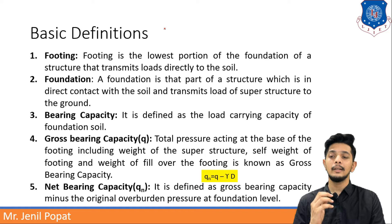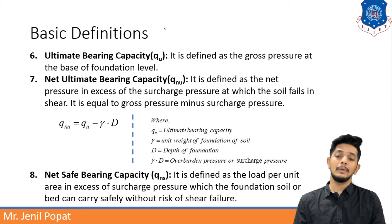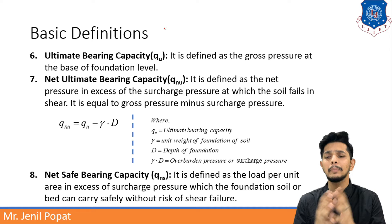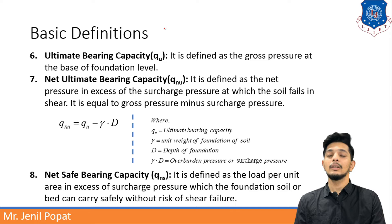Ultimate bearing capacity qu is defined as the gross pressure at the base of the foundation level. Net ultimate bearing capacity, qnu, is defined as the net pressure in excess of surcharge pressure at which the soil fails in shear — that means it breaks. It is equal to gross pressure minus surcharge pressure. Formula: qnu = qu − γ·D.